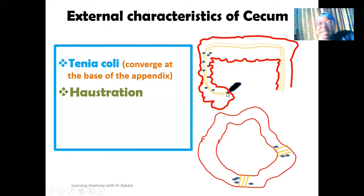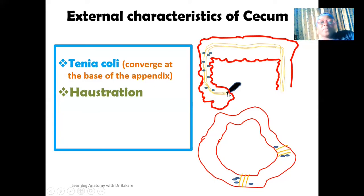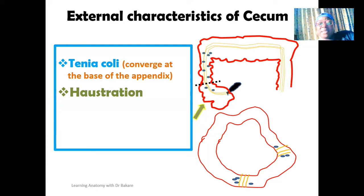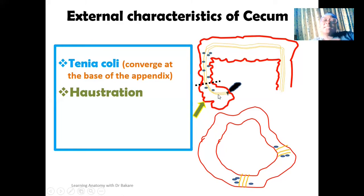The taenia coli are seen to converge at the base of the appendix. This is the appendix highlighted in black — it is a finger-like outpouch seen at the posterior medial part of the cecum. As the taenia coli run through the entire length of the large intestine, you see them converging at the base of the appendix. They also run through the cecum, and that is why you see the haustra created in the external feature of the cecum — the baggy or segmental appearance due to the taenia coli, whose length is shorter than the length of the cecum, causing this folding at its external part.